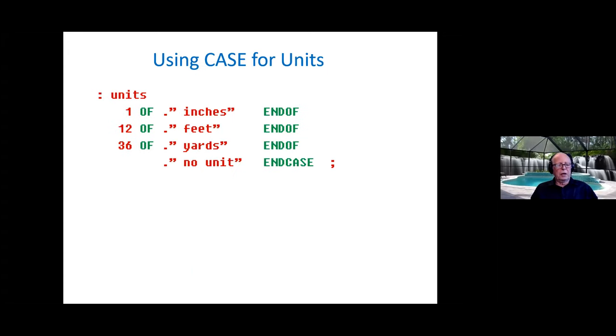So here it's done in case. And look how much cleaner and simpler this is. Whoops, I see there's a mistake in the code. I left out the word case. So immediately after units, there should be the word case. Then 1 of makes a check for input of 1, outputs inches, 12 will output feet, 36 will output yards, and no units. The code to test that would be as just as we did before. We put in 1 units, 12 units, 36 units, and the output is inches, feet, and yards.